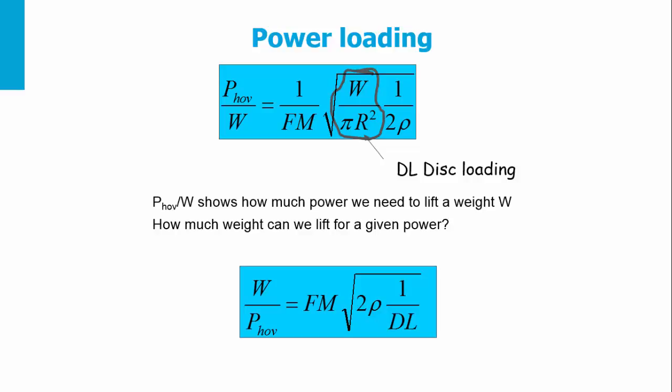The power loading parameter is another design parameter. Dividing the power to hover by the weight, we obtain the formula given in this slide. Recall that the weight divided by the rotor area is the disk loading. Power loading shows how much power we need to lift a certain weight.